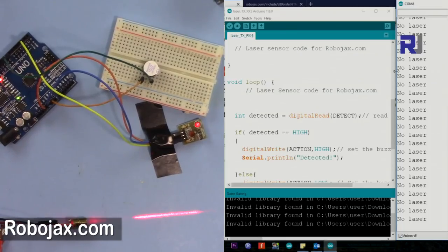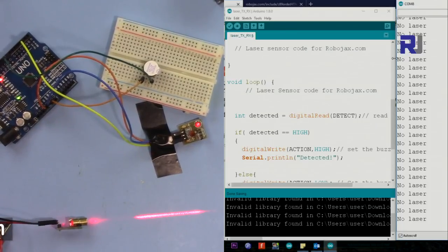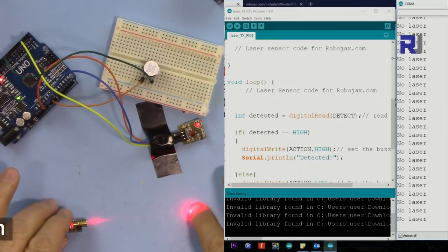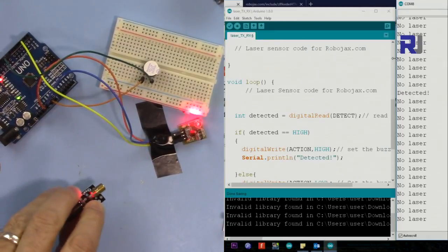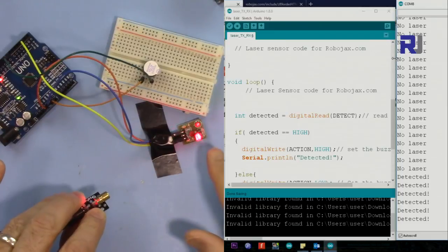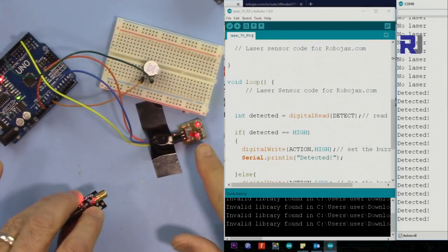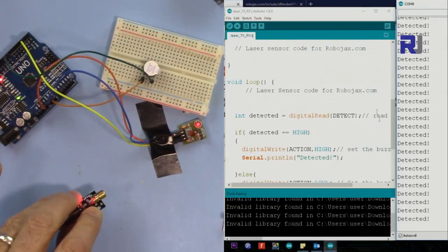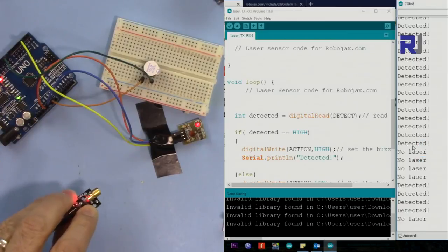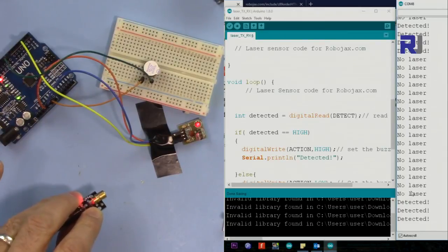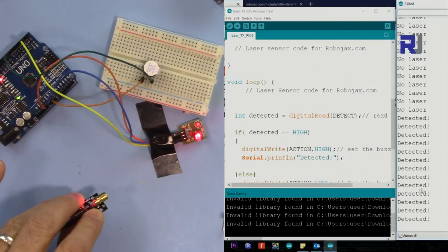Now here is a demonstration again with the screen here. The laser is now in here, so now the laser is shining on the receiver here. As you can see, we see detected. When I go up it says no laser, no lasers, but when it beams on it, it says detected and also the buzzer is buzzing.